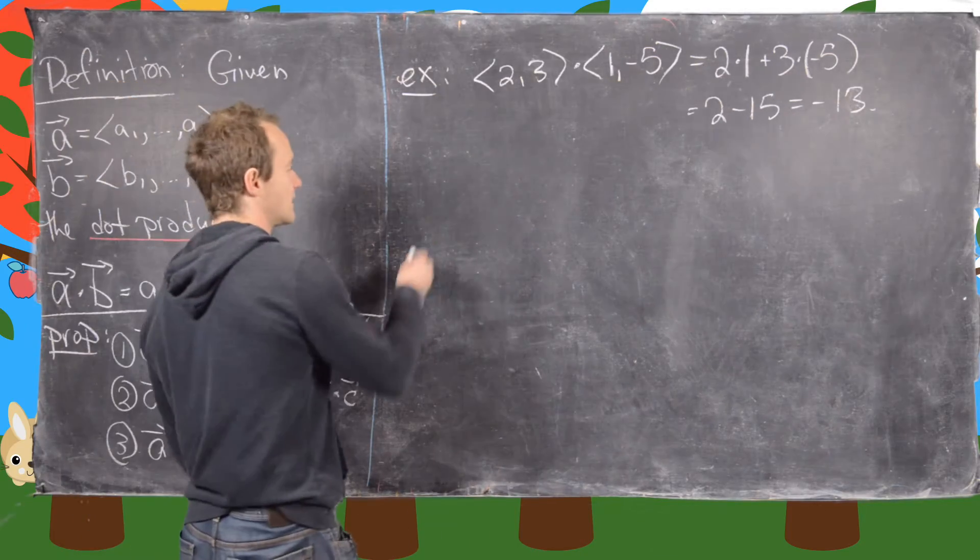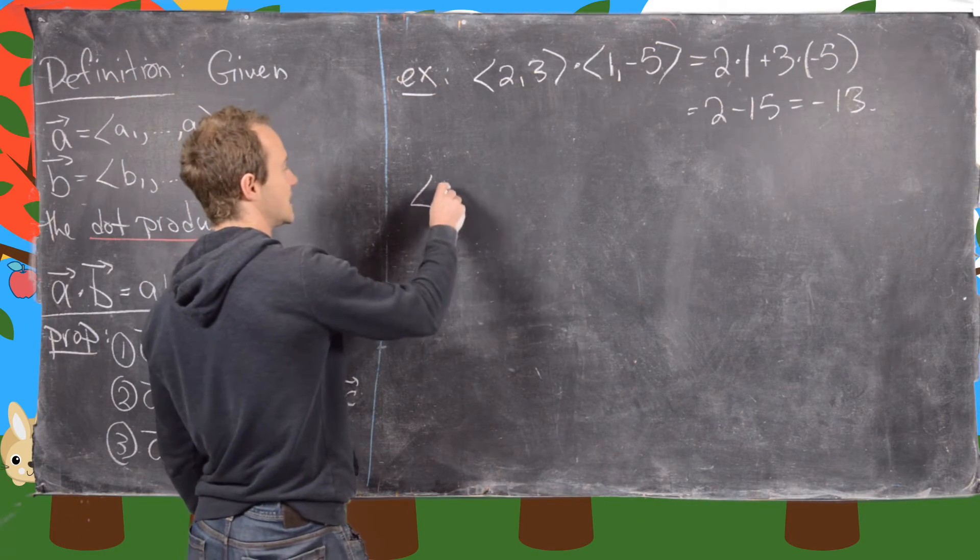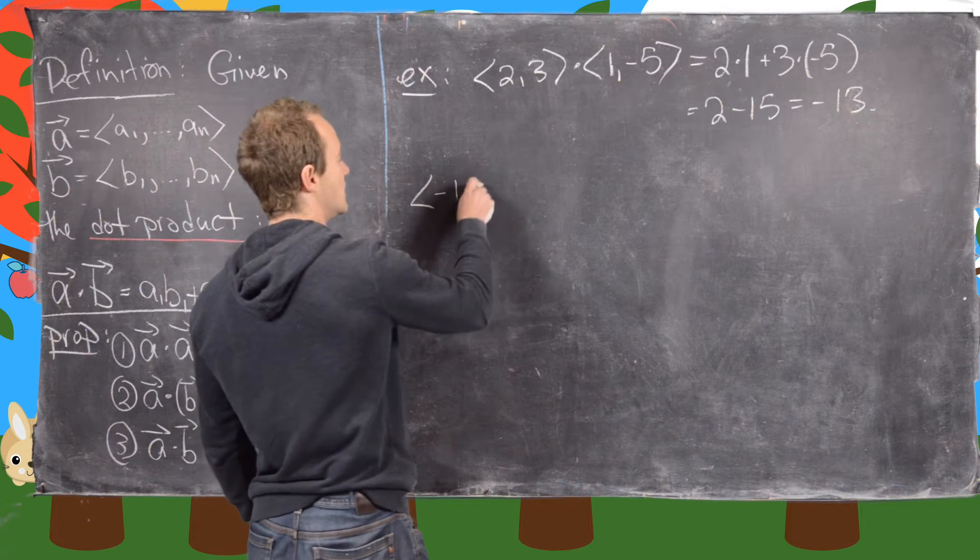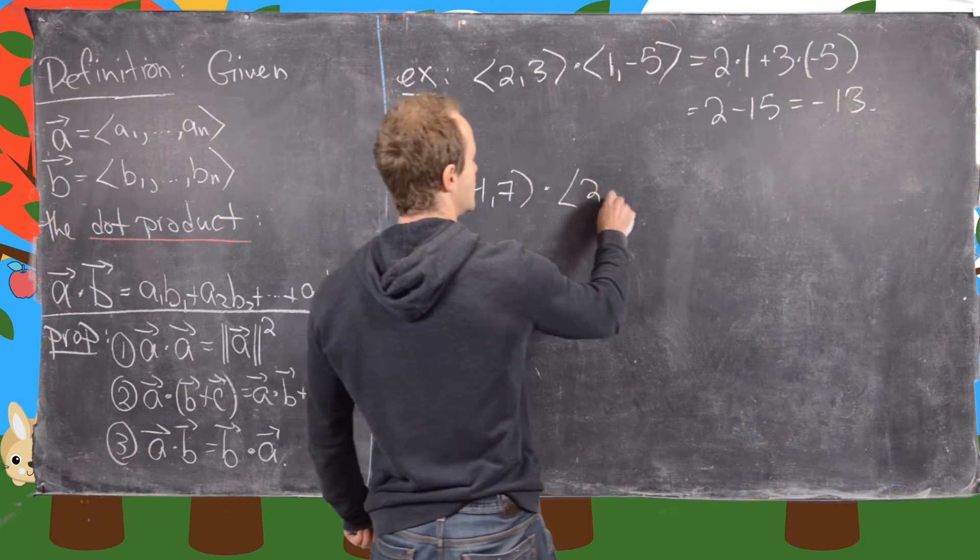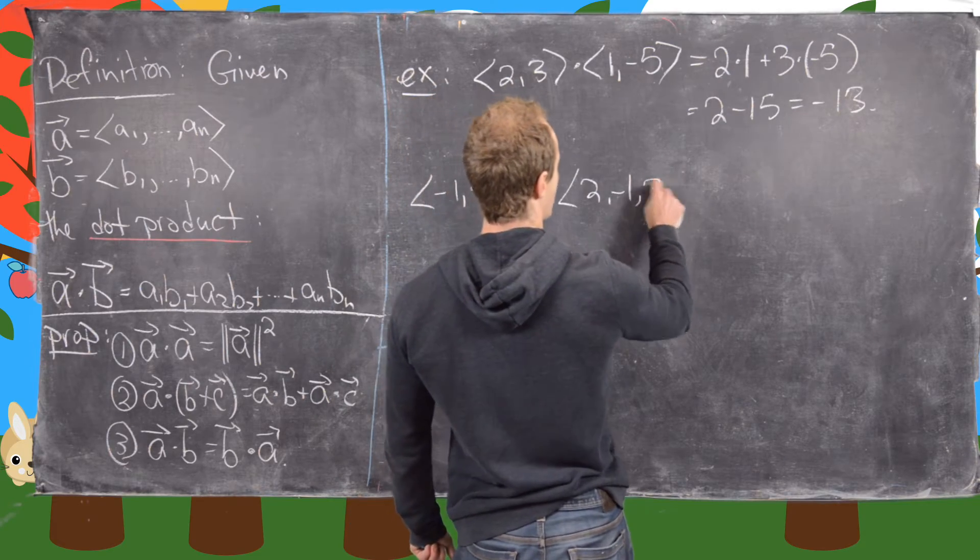Okay, good. And then let's do maybe one three-dimensional example. So let's do minus 1, 4, 7 dot 2 minus 1, 3.